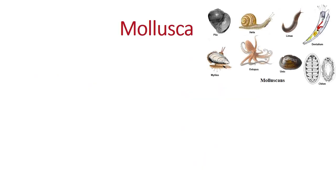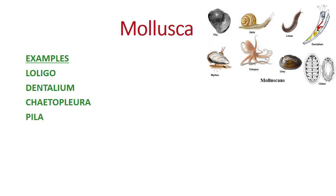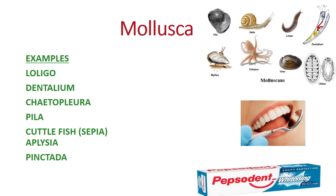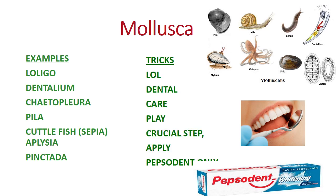The next phylum is Mollusca. The examples given are Loligo, Dentalium, Chiton, Pila, Cuttlefish (also known as Sepia), Aplysia, and Pinctada. To remember them, think of teeth or a dentist and the famous brand Pepsodent — just remember those and you have the trick.